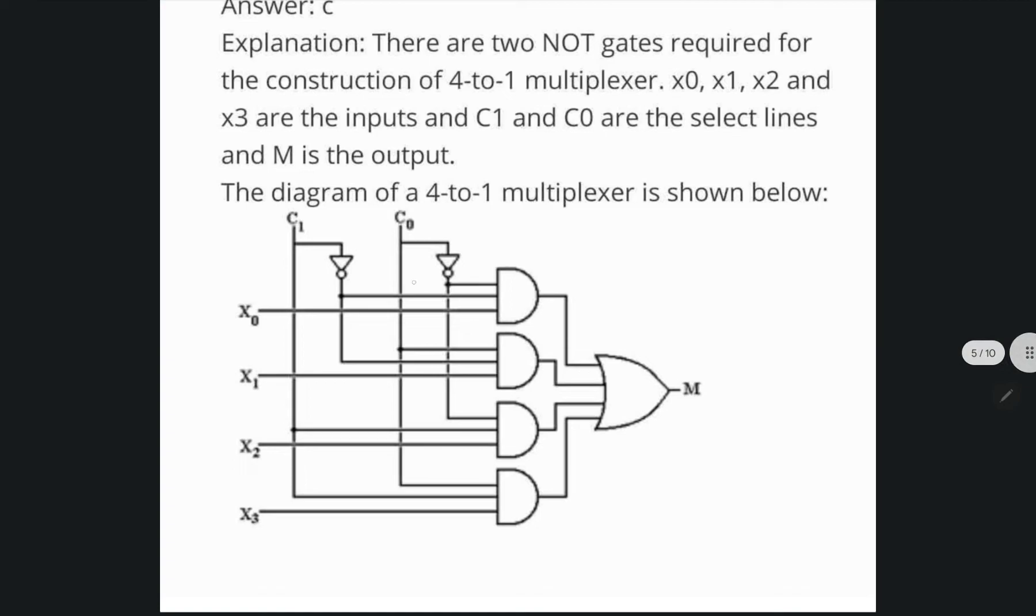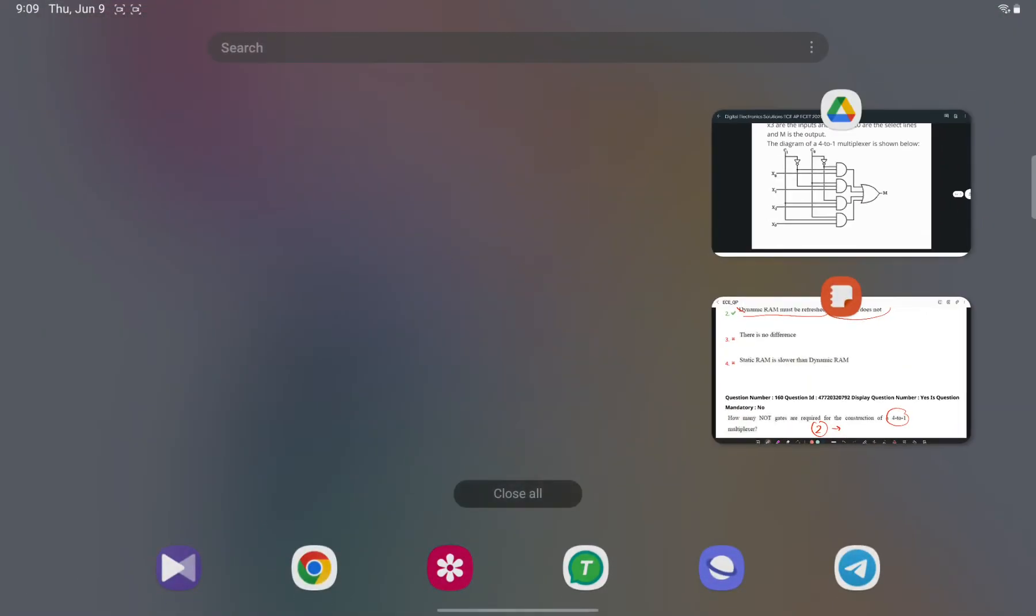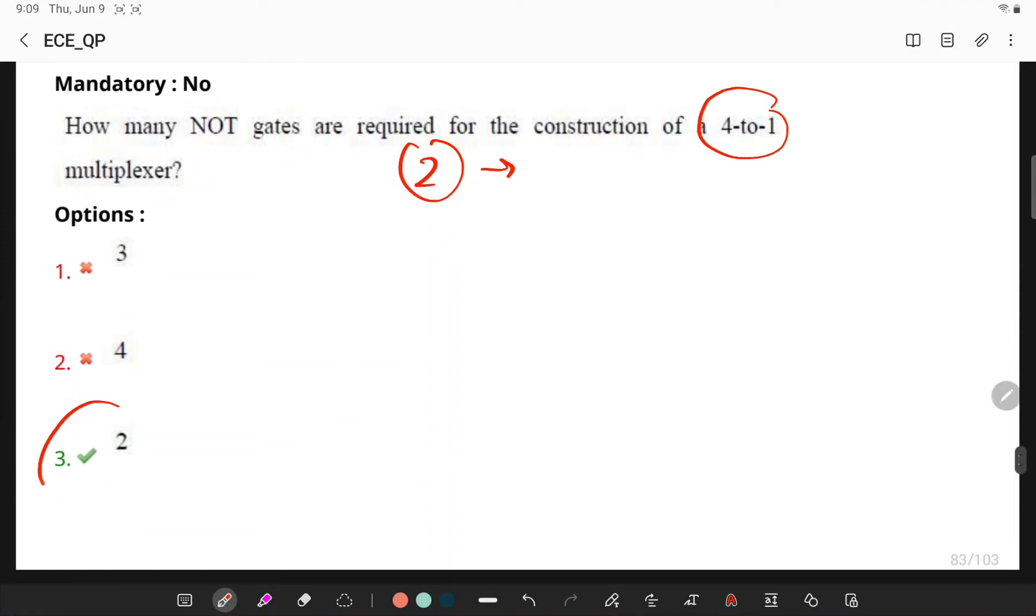you have only 2 NOT gates and you have 4 inputs X0, X1, X2, X3 and C1 and C0 are the selection lines and M is your output which clearly indicates that you need only 2 NOT gates in your 4 by 1 multiplexer.